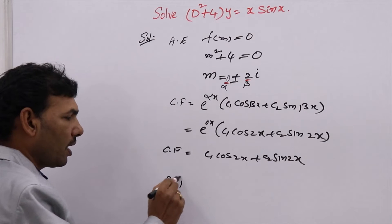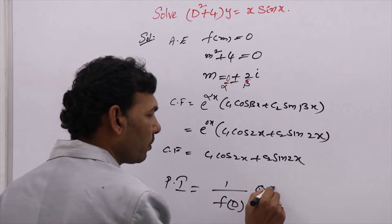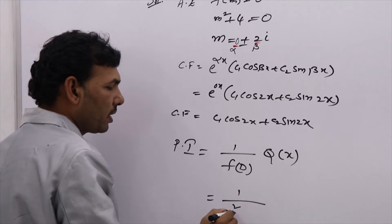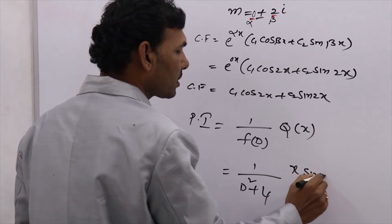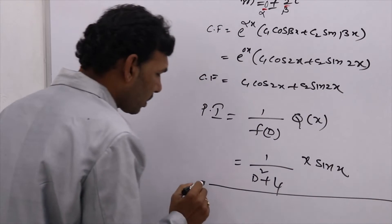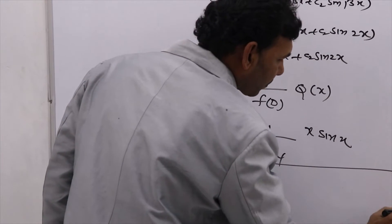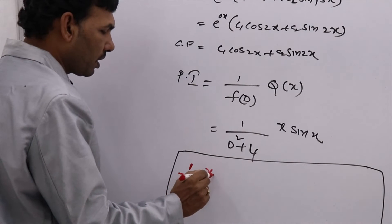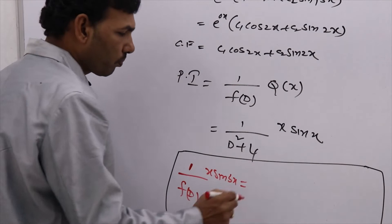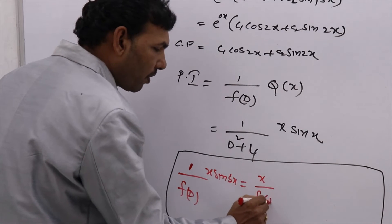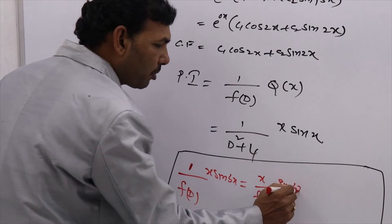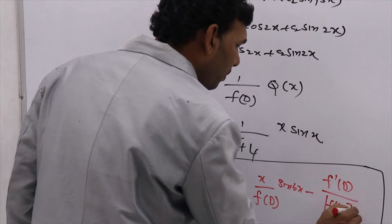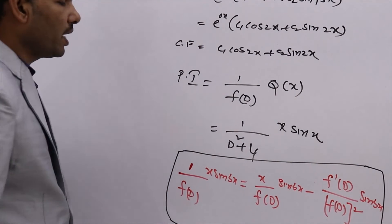Now we need to find the particular integral. PI = 1 by f(D) into Q(x) = 1/(D²+4) · x·sin(x). The formula we are going to use whenever we have x·sin(x) is: x by f(D) into sin(x) minus f'(D) by f(D) whole square into sin(x). Here sin(bx) means sin(x) only. f(D) means D²+4.